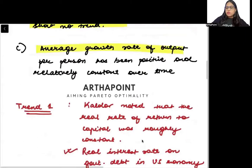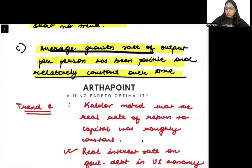Average growth rate of output per person has been positive and relatively constant over time. Growth rate of output is big but it has been almost constant. It has been growing at the same rate.